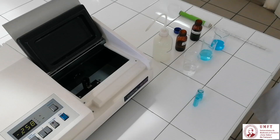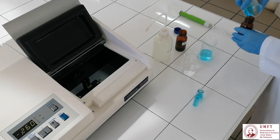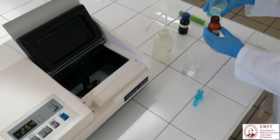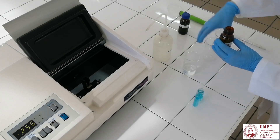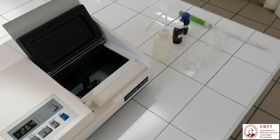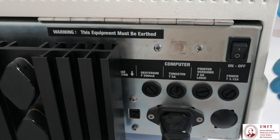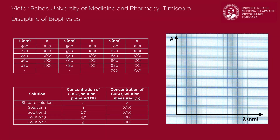Don't discard the stock and the 2% solutions — pour them back into their containers. However, you must discard the prepared dilutions in the sink. Once the experiment is finished, rinse with distilled water all the recipients used and turn off the spectrophotometer. Finally, represent graphically the variation of absorbance with the wavelength.